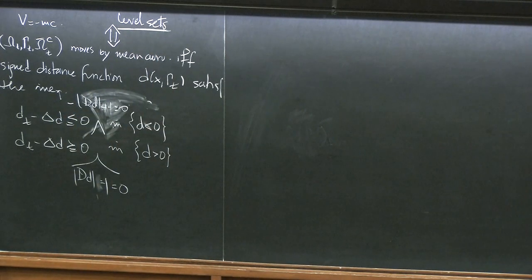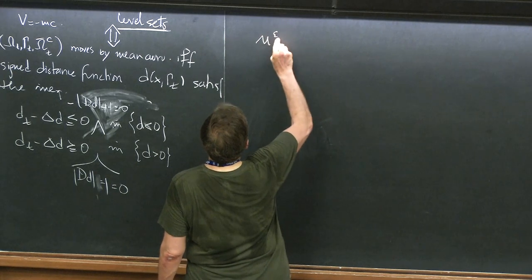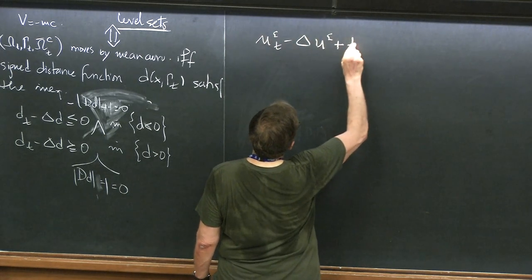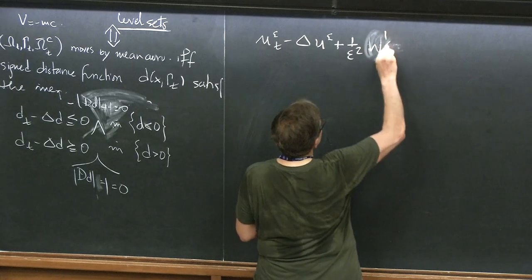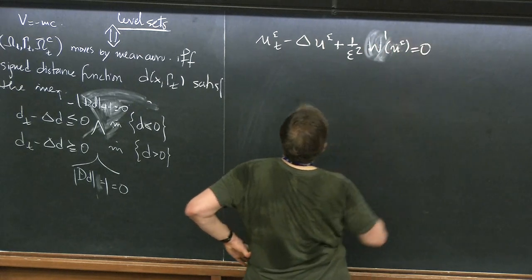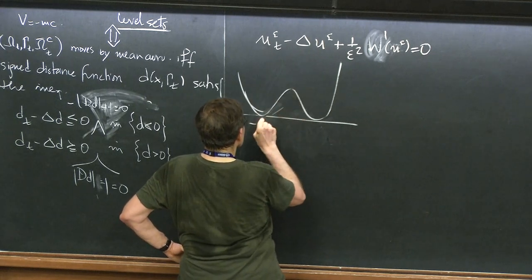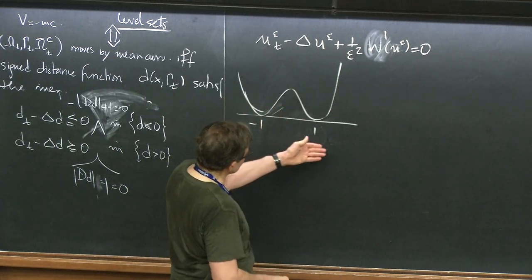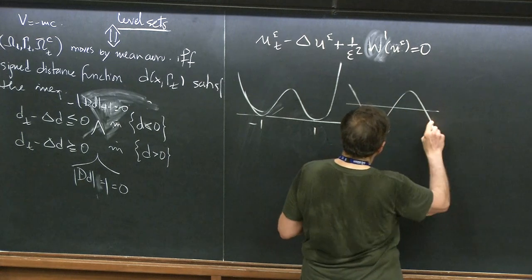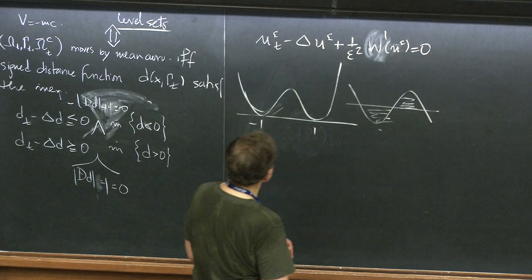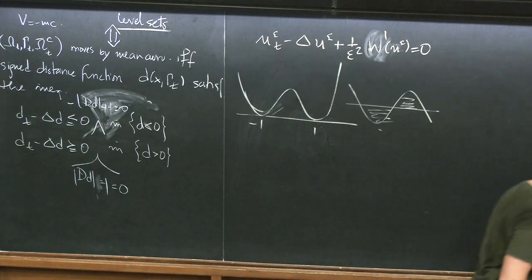Then I said that now we are ready to start studying the asymptotic behavior of reaction diffusion equations, and I wrote down this. Let's write it: epsilon U_t minus epsilon squared Laplacian U epsilon plus W prime of U epsilon equals zero, where W is a double well potential with wells at minus 1 and 1. That implies that W prime is something like that.